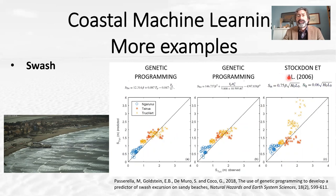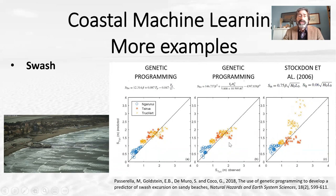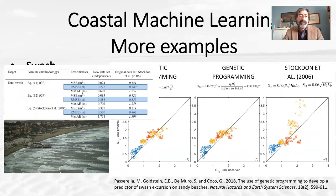We then applied those formulas — and also Stockton's — to datasets from three beaches, two in New Zealand and one in France, on data that none of these equations had ever seen before. Visually we can see there is a different type of spread around the one-to-one line. So the genetic programming actually works better also on datasets it has never seen before, which addresses a typical criticism towards machine learning. The error metrics confirm that on both the original and the new datasets, machine learning seems to always work better and provide more accurate predictions.